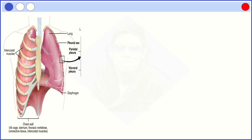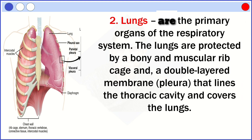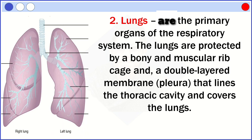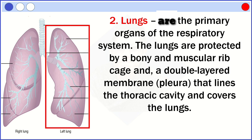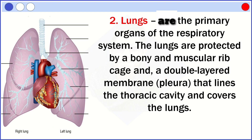Another part of the lower respiratory tract is the lungs. Lungs are the primary organs of the respiratory system. The lungs are protected by a bony and muscular rib cage and a double-layered membrane called the pleura, which lines the thoracic cavity and covers the lungs. You have two lungs, but they are not the same size. The lung on the left side of your body is a bit smaller than the lung on the right. This extra space on the left leaves room for your heart.